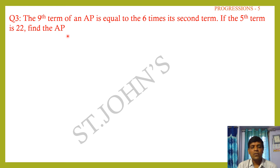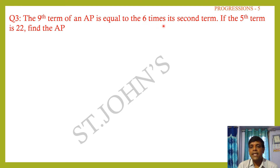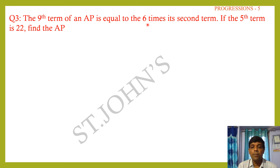The AP series is: a, a+d, a+2d, a+3d, ... Substituting a = 2, d = 5: 2, 7, 12, 17, ... The common difference is 5 throughout, confirming this is an AP.